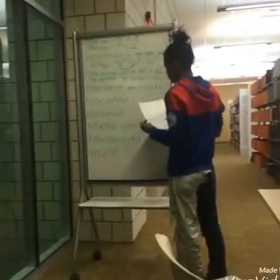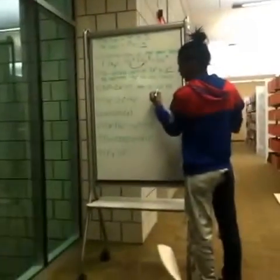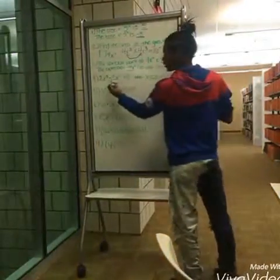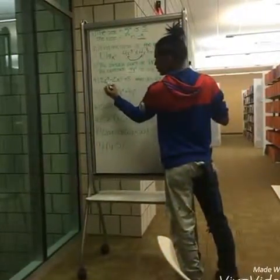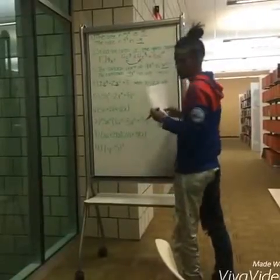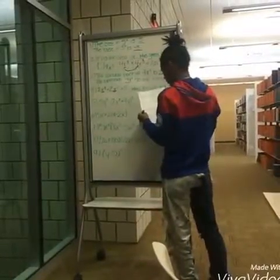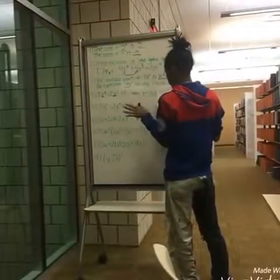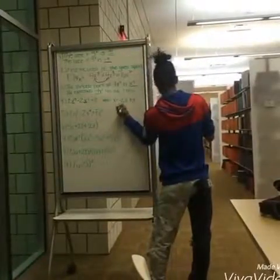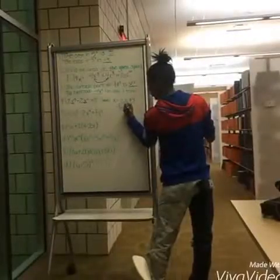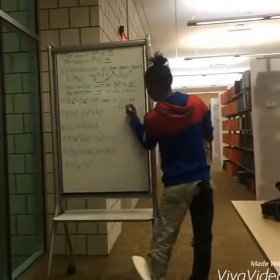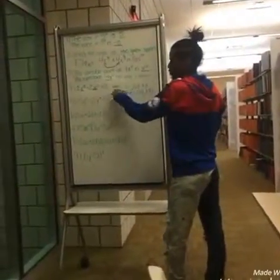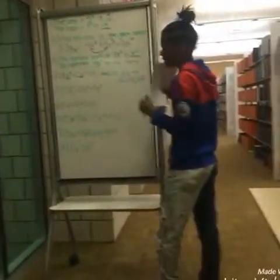For number four, when you plug in negative two, three, and four, you plug them into the x variables. For negative two you get negative 16, for three you get 44, and for four you get 104, when you substitute x with these numbers given.